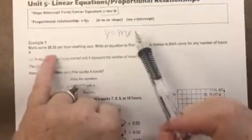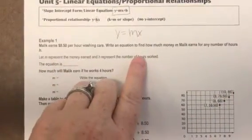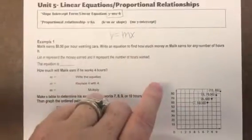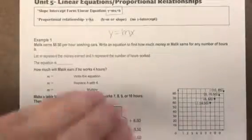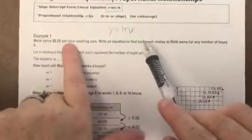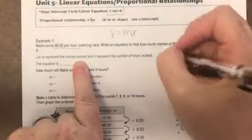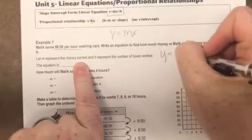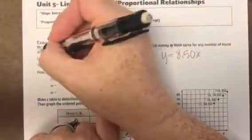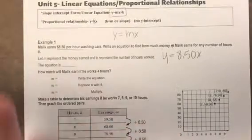Malik earns $8.50 per hour washing cars. Write an equation to find how much money Malik earns for any number of hours h. We're going to deal with y equals mx. What is our m here if you're doing $8.50 per car? So we're going y equals $8.50 times x. If we were using their letters it would be m equals $8.50 h, but we're not going to change the letters, we're just going to stick with this.